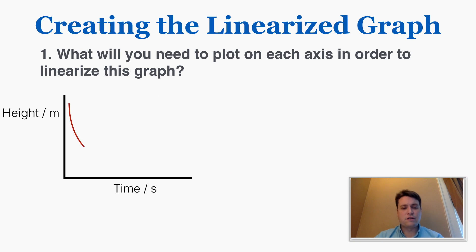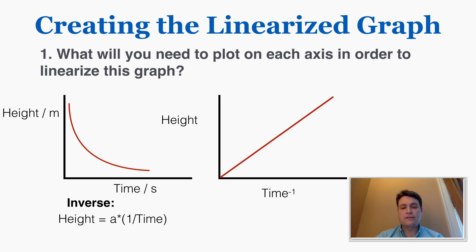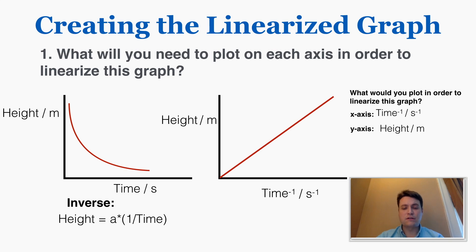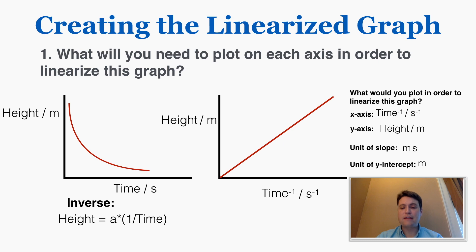One more example: if you have a function that is clearly inverse, the relationship is height equals a times one over time. To linearize this, you put height on the y-axis and one over time — or time to the power of negative one — on the x-axis. The units will be meters and one over seconds (or seconds to the power of negative one). The units of slope would be meters divided by one over seconds, which works out to meters times seconds, and the unit of the y-intercept would just be meters.